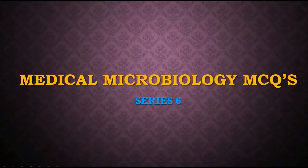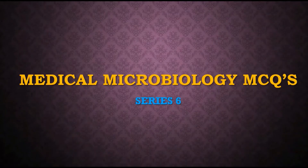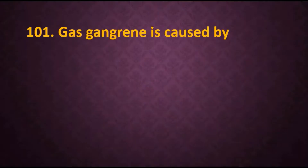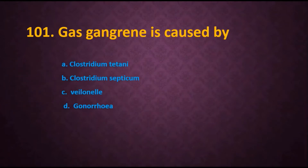Hi everyone, in series 6 of medical microbiology MCQs we are going to discuss questions 101 to 120. Let's begin. Question 101: Gas gangrene is caused by — options are: A) Clostridium tetani, B) Clostridium septicum, C) Veillonella disganaria, and D) Clostridium perfringens.